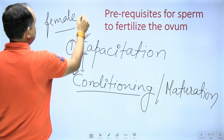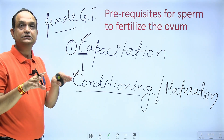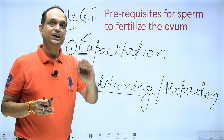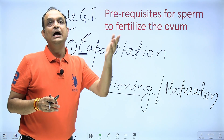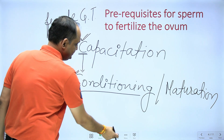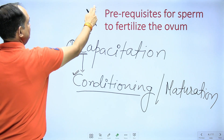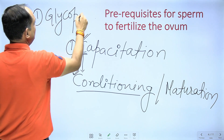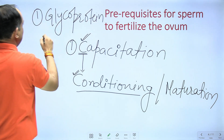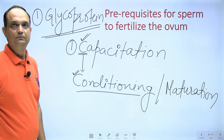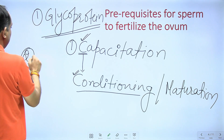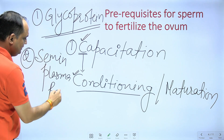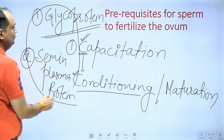For capacitation — the conditioning — this conditioning takes place in the female genital tract when there is contact of the sperm with the female mucosa. The female mucosa produces some enzymes, and those enzymes will change the property of the head of the sperm. Two things change: first, there is a removal of the glycoprotein coat from the head of the sperm.